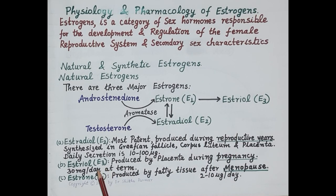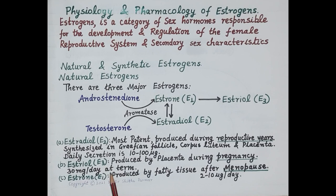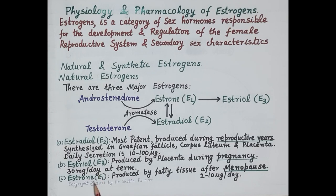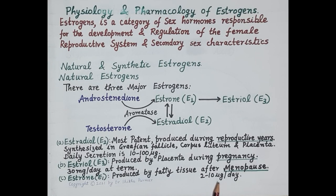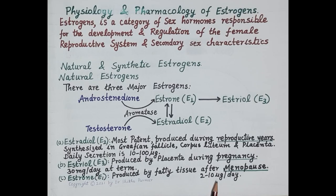Estriol is primarily produced by the placenta during pregnancy, and the levels of estriol rise as high as 30 milligrams per day at term. Estrone is produced by fatty tissues after menopause, with a daily secretion of around 2 to 10 micrograms per day.